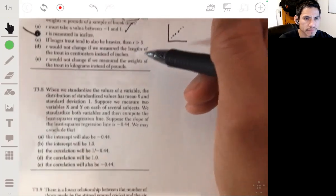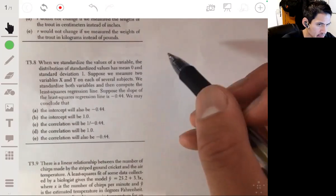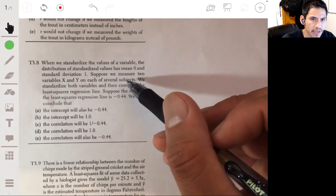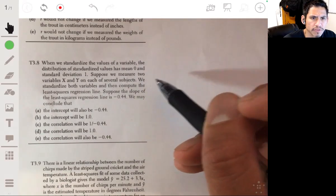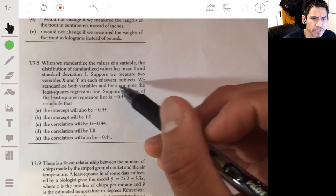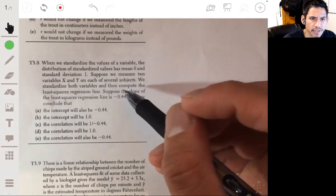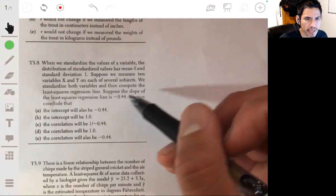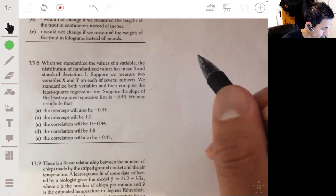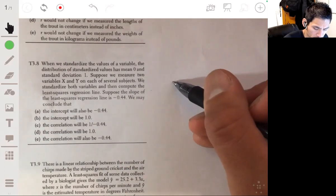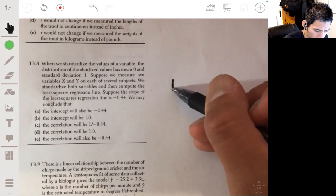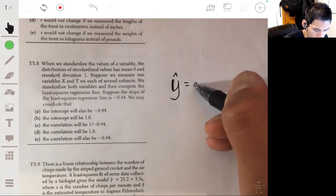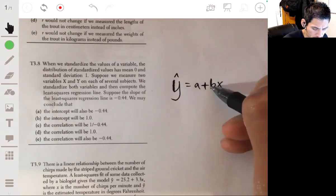All right, number eight. When we standardize the values of a variable, the distribution of standardized values has mean zero and standard deviation one. Suppose we measure two variables, x and y, on each of several subjects. We standardize both variables and then compute the least squares regression line. Suppose the slope of the least squares regression line is negative 0.44. We may conclude that. Okay, so the regression line typically will have a form y hat equals a plus bx. b is your slope.